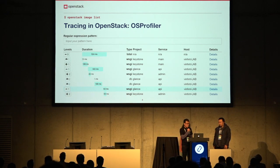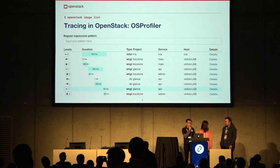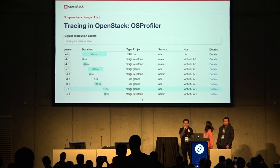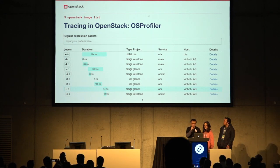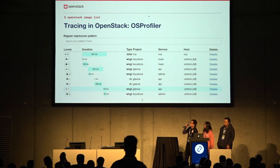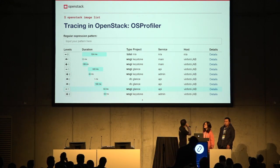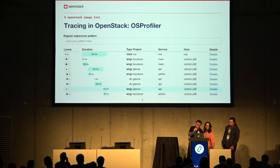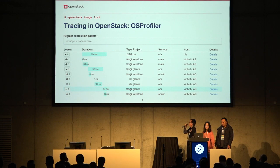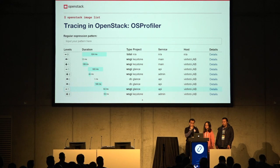Here is a representation of tracing in OpenStack with a simple command: openstack image list. I'm sure everyone knows this command. You can see the duration of this request is about 524 milliseconds. OS profiler can trace a lot of things such as WSGI code, DB code, and across services — Keystone and Glance, as you can see in this slide. Later I'll show you more information that OS profiler can trace.